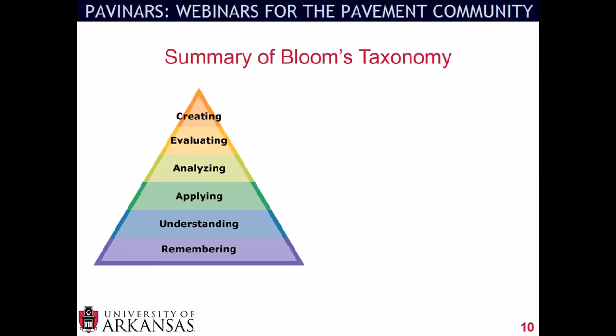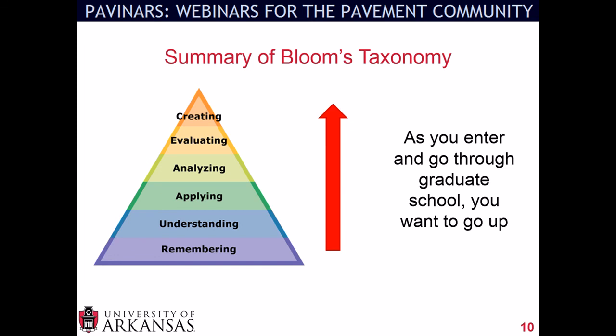The core of this is the pyramid. The summary of Bloom's Taxonomy is remembering, understanding, applying, analyzing, evaluating, and creating. It's my perspective that as you enter and go through graduate school — transitioning from an undergrad into a master's student, perhaps into a doctoral student — you want to go up this pyramid. You need those fundamental skills of remembering, understanding, and applying, but as you continue moving forward, you'll do more analysis, more evaluating, and then you'll get to what I find most exciting, which is the creating. Thank you for joining me today, and I hope you have a wonderful day.